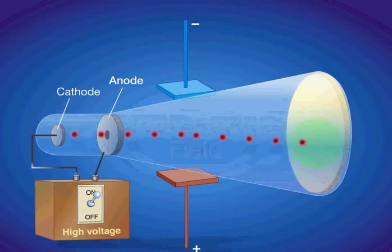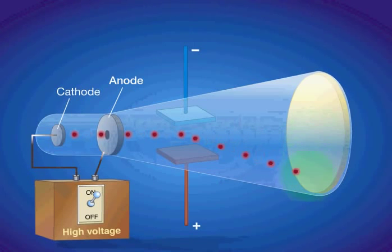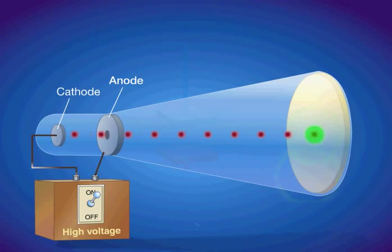When an electric field is applied across the cathode ray tube, the cathode ray is attracted by the plate bearing positive charges. Therefore, a cathode ray must consist of negatively charged particles. We know these negatively charged particles as electrons.